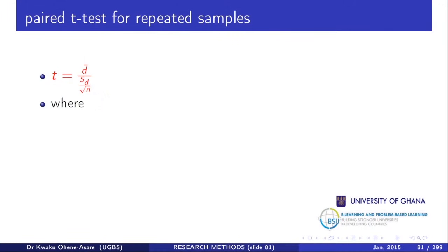D-bar is the mean of the sample differences. Before finding D-bar, first calculate the difference for each observation: after minus before. If before was 2 and after is 5, the difference is 5 minus 2, giving positive 3. Sometimes the before is larger — say 4 before and 3 after — giving negative 1. Some differences will be negative, some positive.